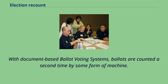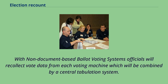With document-based ballot voting systems, ballots are counted a second time by some form of machine. With non-document-based ballot voting systems, officials will recollect vote data from each voting machine, which will be combined by a central tabulation system.